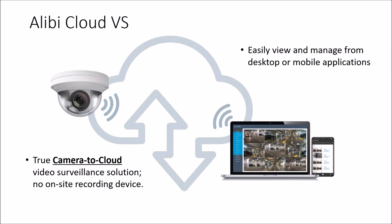Alibi Cloud VS is a video as a service solution. We call this a camera-era cloud video surveillance solution because there is no on-site recorder. You install cloud-supported cameras onto a customer's network, and those cameras stream directly to the cloud for storage and management. It's designed to be easy to manage because you have direct access for all features via desktop or mobile application for multiple operating systems — Windows, Mac OS X, iOS, or Android.